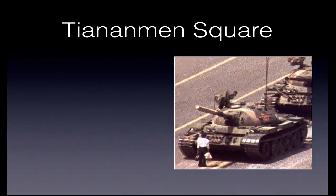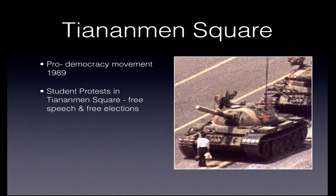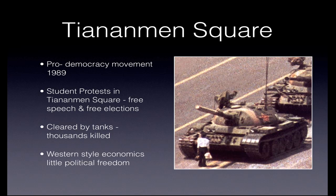Let's look at the Tiananmen Square events, which happened in 1989. Tiananmen Square is a large square in front of the Forbidden City in Beijing. There was a pro-democracy movement in 1989 which camped out in Tiananmen Square and demanded democracy — largely led by students, though other people joined in. They called for free speech and free elections. The market reforms had been going on for nearly ten years, so in some ways China had reformed, but the government was certainly not ready for this type of protest. Eventually the square was cleared by tanks and thousands of people were killed as the government clamped down. This left a situation of Western-style economics with little political freedom.